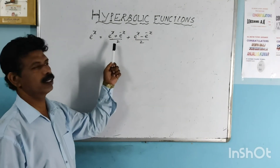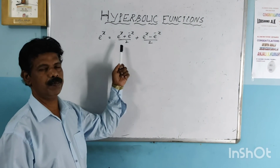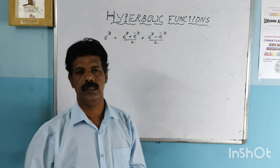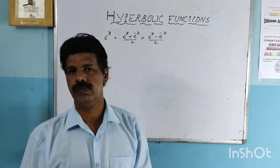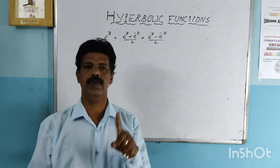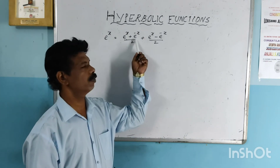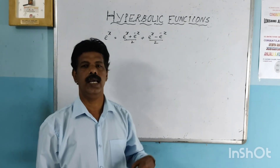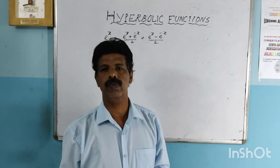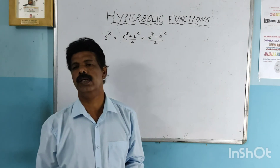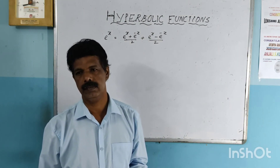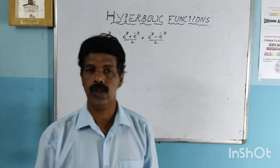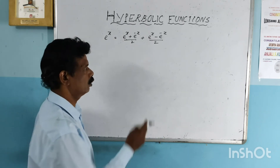The term e raised to x plus e raised to minus x all over 2 is known as a hyperbolic even function, and e raised to x minus e raised to minus x all over 2 is known as an odd function. The even function is called a hyperbolic cosine function and the odd function is known as a hyperbolic sine function.